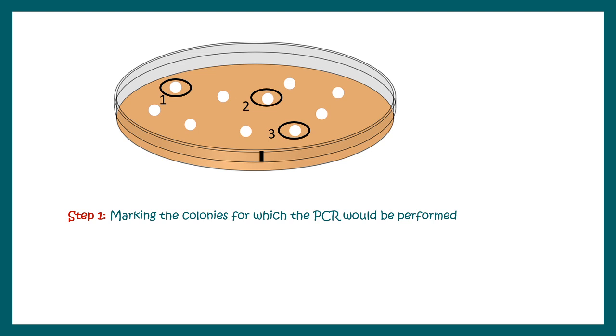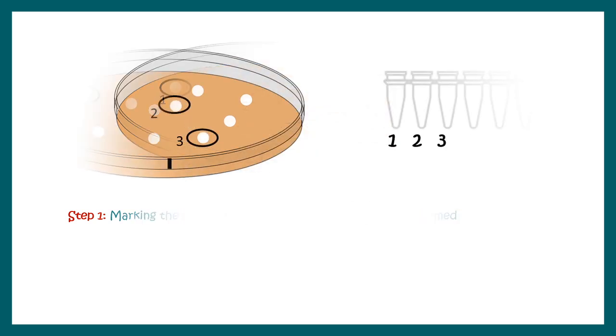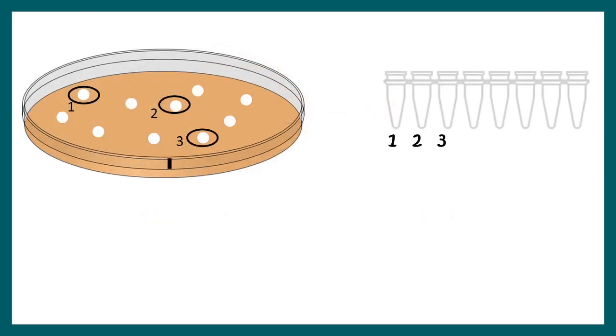For simplicity, we are only picking up three colonies to understand whether the recombinant construct is there or not. We would first scrape out a little portion of these colonies with the help of a sterilized pipette and put it in PCR strips. We would do the same for colony number two and three as well.